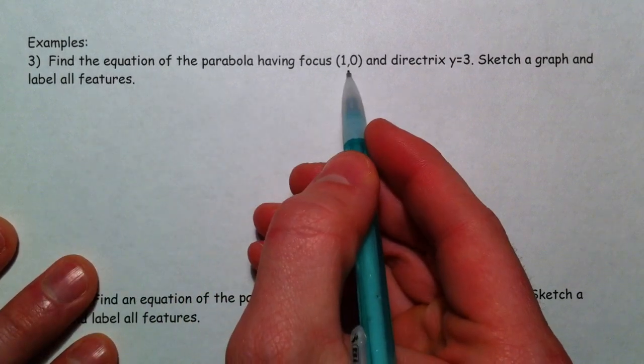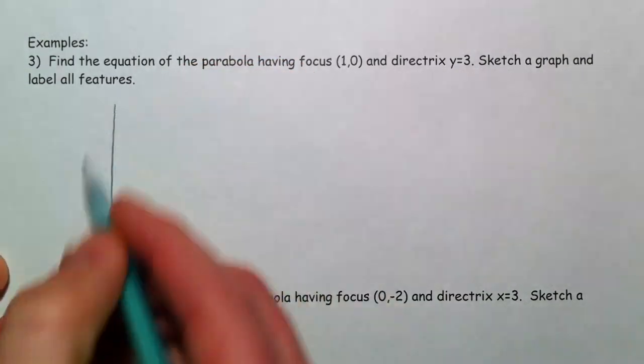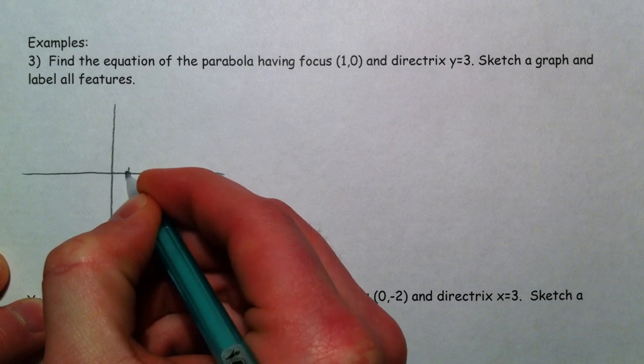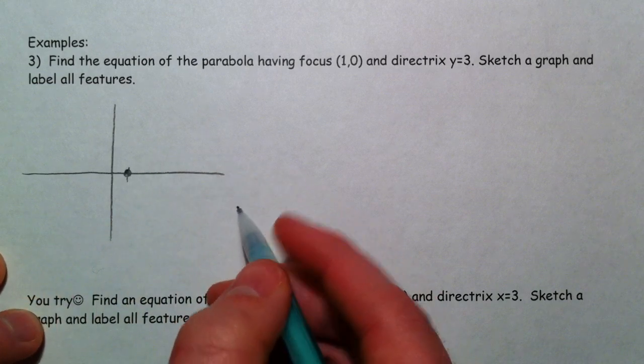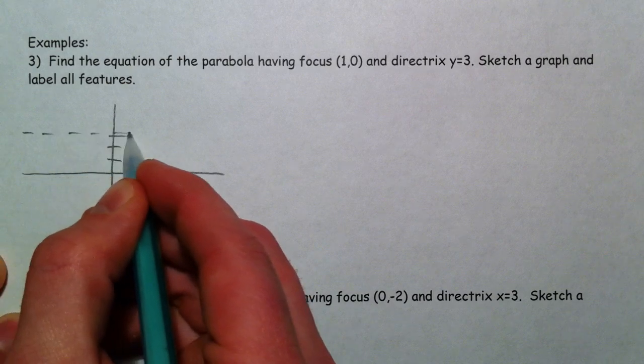Let's find the equation of the parabola having a focus of (1,0) and a directrix at y equals 3. The point (1,0) is right here, and y equals 3—1, 2, 3. Remember, the directrix is a line.